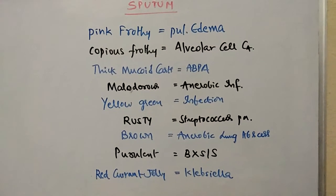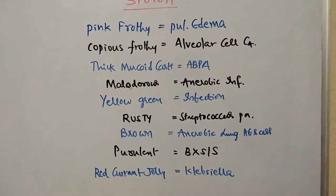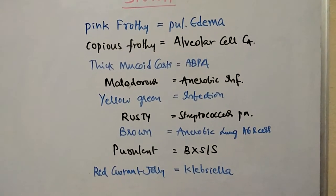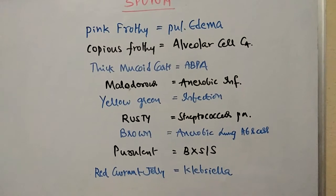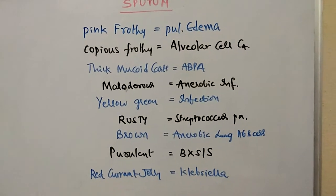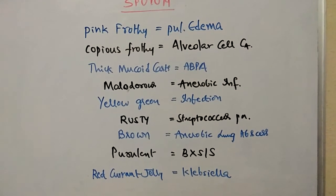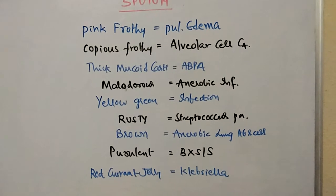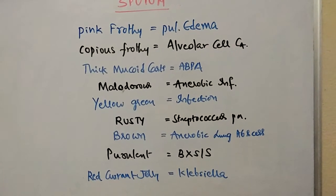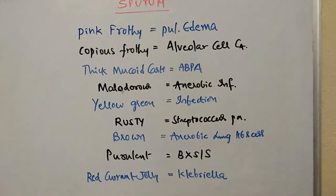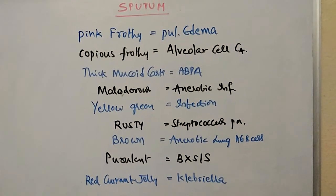Sputum with a yellow-green color is in favor of infection. Rust-colored sputum is seen in Streptococcus pneumoniae. Brown-colored sputum is seen in anaerobic lung abscess. Purulent sputum is seen in bronchiectasis, and red-currant jelly sputum is seen in Klebsiella pneumoniae.